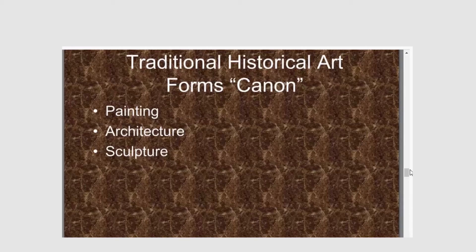So in Western art history, architecture and sculpture were originally seen as forms of very high art. Painting came a little later, but for the first several centuries of the study of art history these three forms — painting, architecture, and sculpture — were considered the traditional true art forms, and other kinds of media were not considered as seriously.